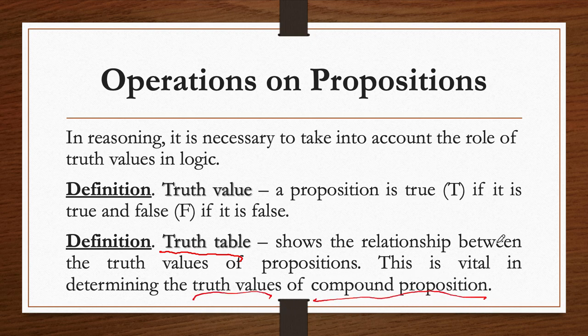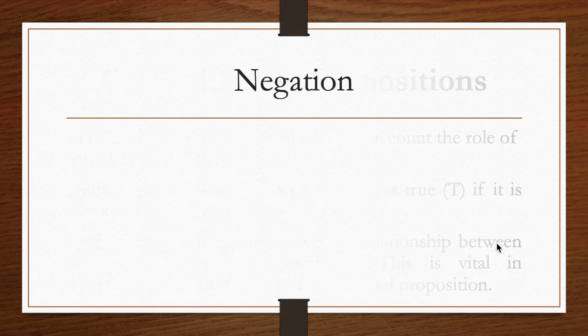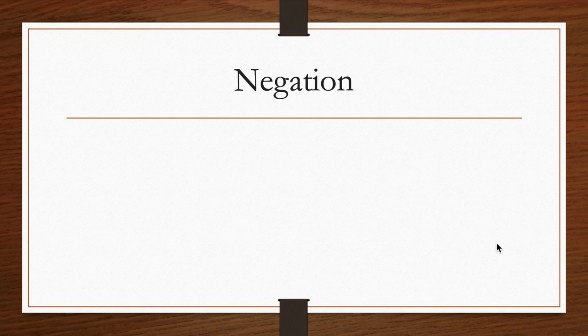Let's talk about them one by one. We're going to recall the five logical connectors or operators: negation, conjunction, disjunction, biconditional, and conditional — or shall we say, implication or de-implication.